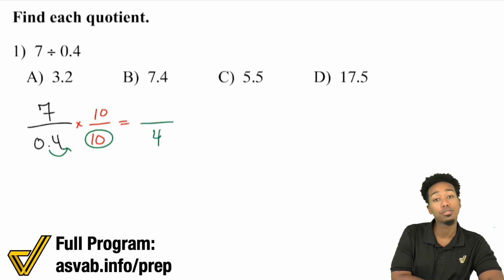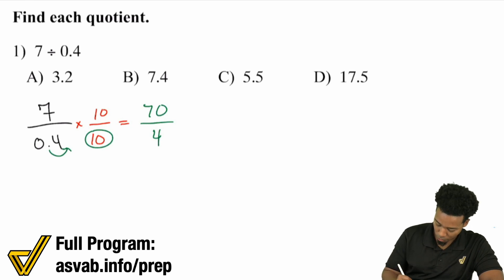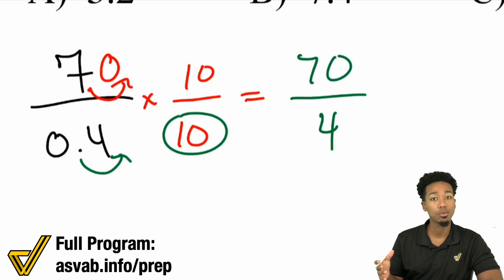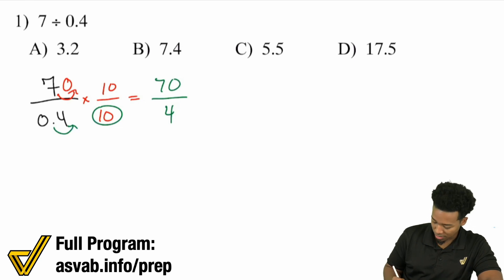When you multiply by 10, all you're doing is moving the decimal place over to the right one time. So this really becomes division by 4 now. And then 7 times 10 up top, that's 70. So this really is 70 divided by 4, instead of 7 divided by 0.4. All you did was move the decimal place over one time for each of the numbers.